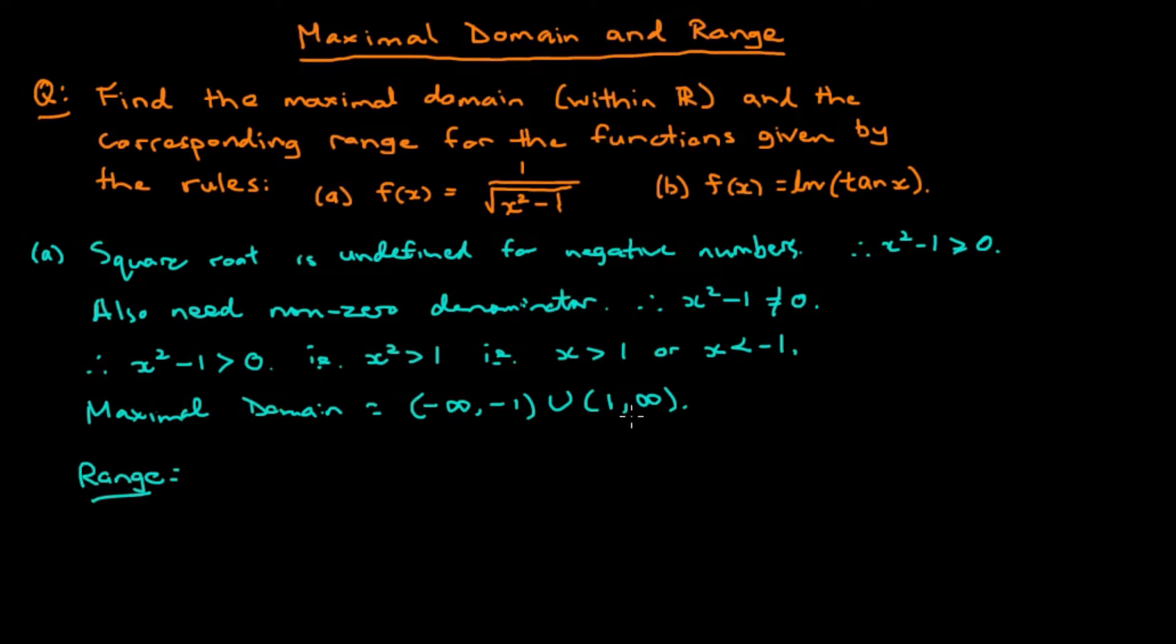We'll start by looking at what happens to the function for x values in this interval as they get close to 1. So as x approaches 1 from above, we see that x squared will also approach 1 from above. x squared minus 1 will approach 0 from above. The square root of that will also approach 0 from above. And 1 over that square root will approach infinity.